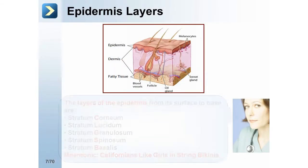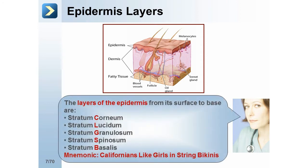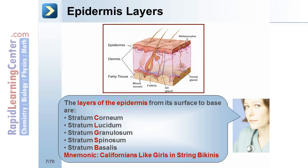The layers of the epidermis from its surface to base are: stratum corneum, stratum lucidum, stratum granulosum, stratum spinosum, and stratum basalis. You can remember this with the mnemonic: Californians like girls in string bikinis.